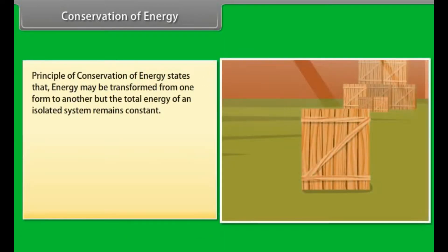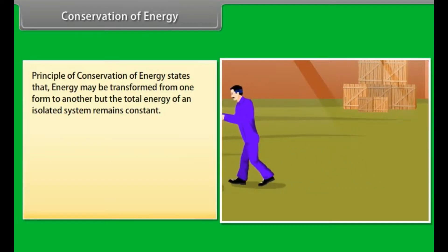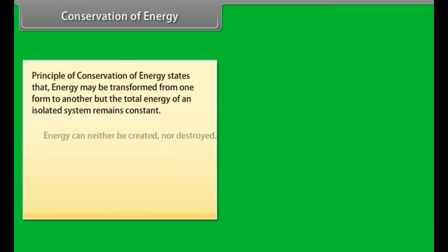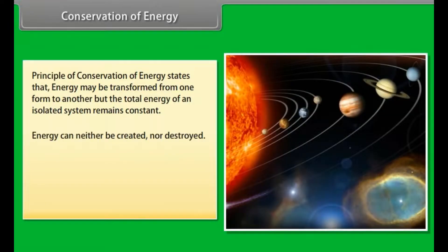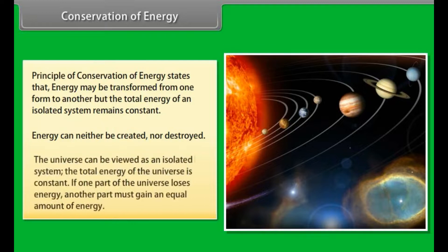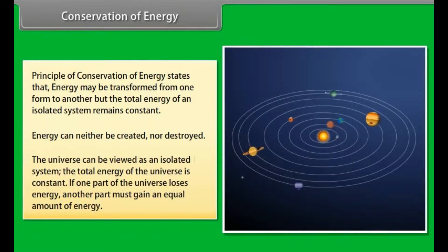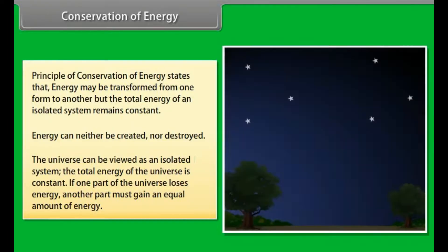Conservation of energy. Principle of conservation of energy states that energy may be transformed from one form to another, but the total energy of an isolated system remains constant. Energy can neither be created nor be destroyed. The universe can be viewed as an isolated system. The total energy of the universe is constant. If one part of the universe loses energy, another part must gain an equal amount of energy.